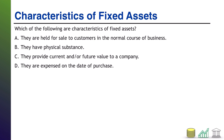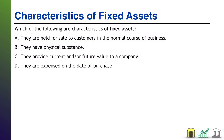Welcome back. Which of the following? I'm going to go through these in order and discuss each one, and we'll circle the ones that are right along the way. Starting with A: fixed assets are held for sale to customers in the normal course of business. That is not the description of a fixed asset — that is actually the description of inventory.